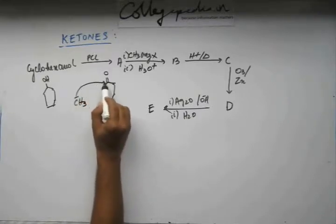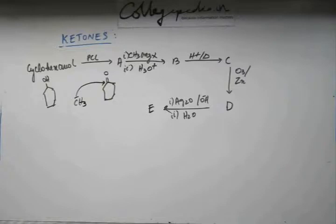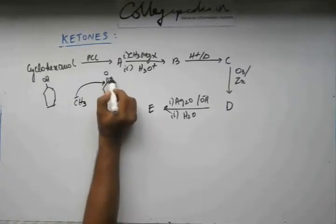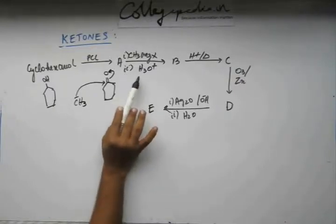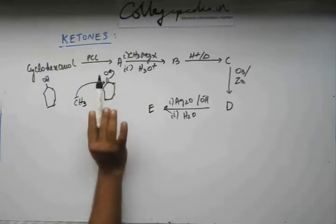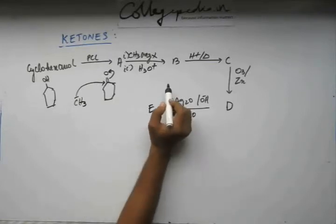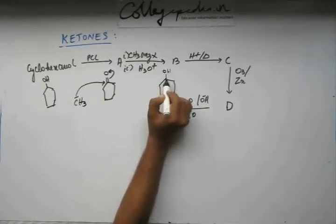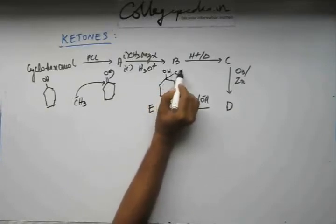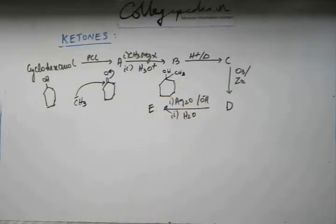This Grignard reagent is going to attack on this C double bond O and the electron of this C double bond O is going to rest in the orbital of oxygen. And when you protonate further then this O minus becomes OH. So B will be what? B will come out to be this alcohol.